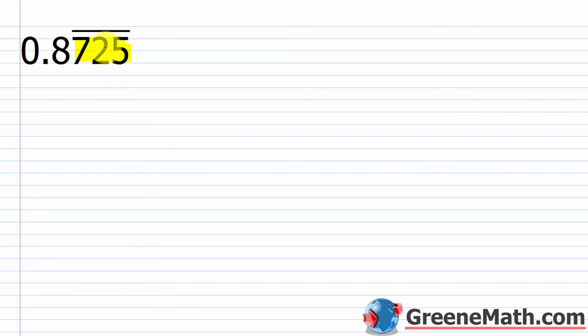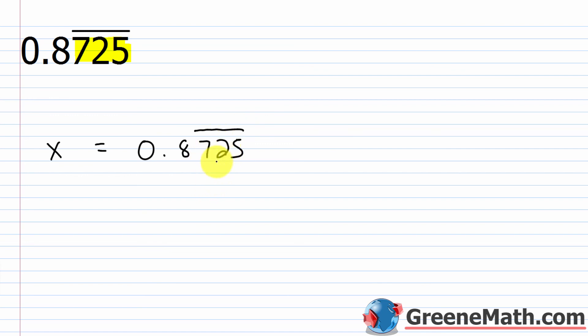Let's take a look at one final problem. We have 0.8725 where the 7, 2, and 5 repeat forever. Set this equal to x, so x equals 0.8725 with a bar over the 7, 2, and 5. Multiply both sides by 10 to the power of n, where n is the number of digits in the repeating string — that's three digits — so multiply by 10 to the third power, or 1000.